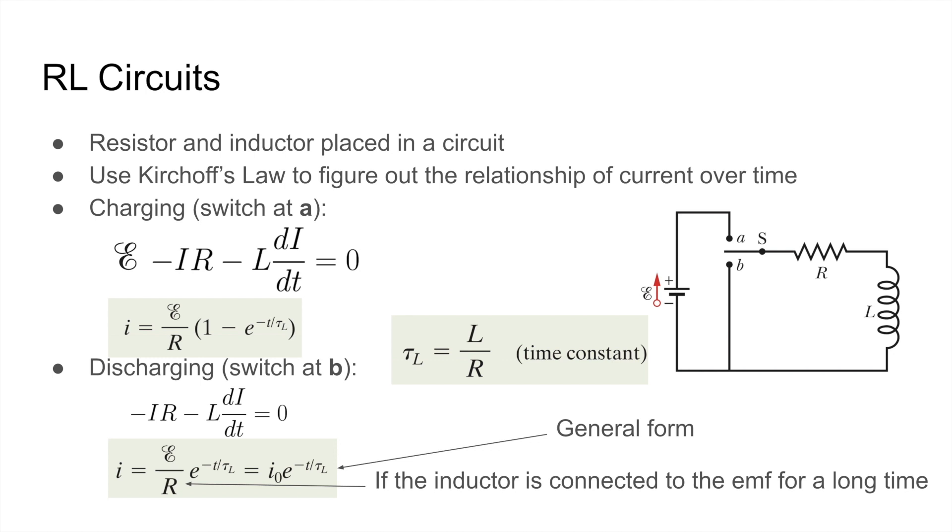Similarly, for discharging, when the switch is at B, we just get negative IR minus LDI over DT is zero, because the EMF is just not included in this circuit. So solving, we get I is equal to EMF over R times E to the negative T over the time constant, where the time constant is the same. Now this equation is only true if the inductor is connected to the EMF for a long time, and the initial current starts off at EMF over R.